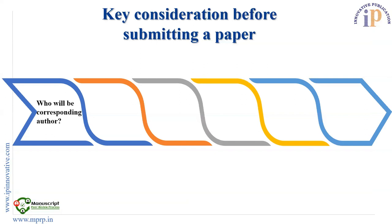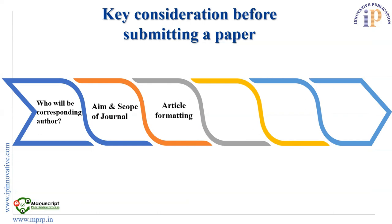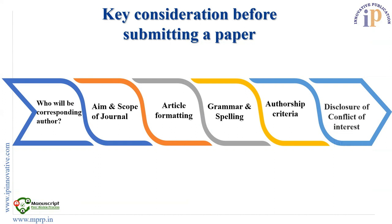Key considerations before submitting a paper. These are some basic key considerations that an author should consider before submitting a paper to a journal. Who will be the corresponding author should be very clear to all the authors. Aim and scope of the journal, and article formatting. Grammar and spelling — before submitting a paper, you must ensure all spellings are correct and the paper is grammatically sound, with no grammatical issues. Then, authorship criteria and disclosure of conflict of interest, if any.